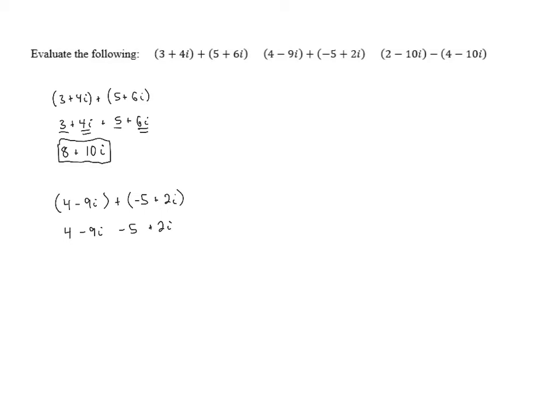And again, we can combine the real and imaginary parts. For the real parts, 4 minus 5 gives us negative 1. And for the imaginary parts, negative 9i plus 2i gives us negative 7i. And so we end up with negative 1 minus 7i.